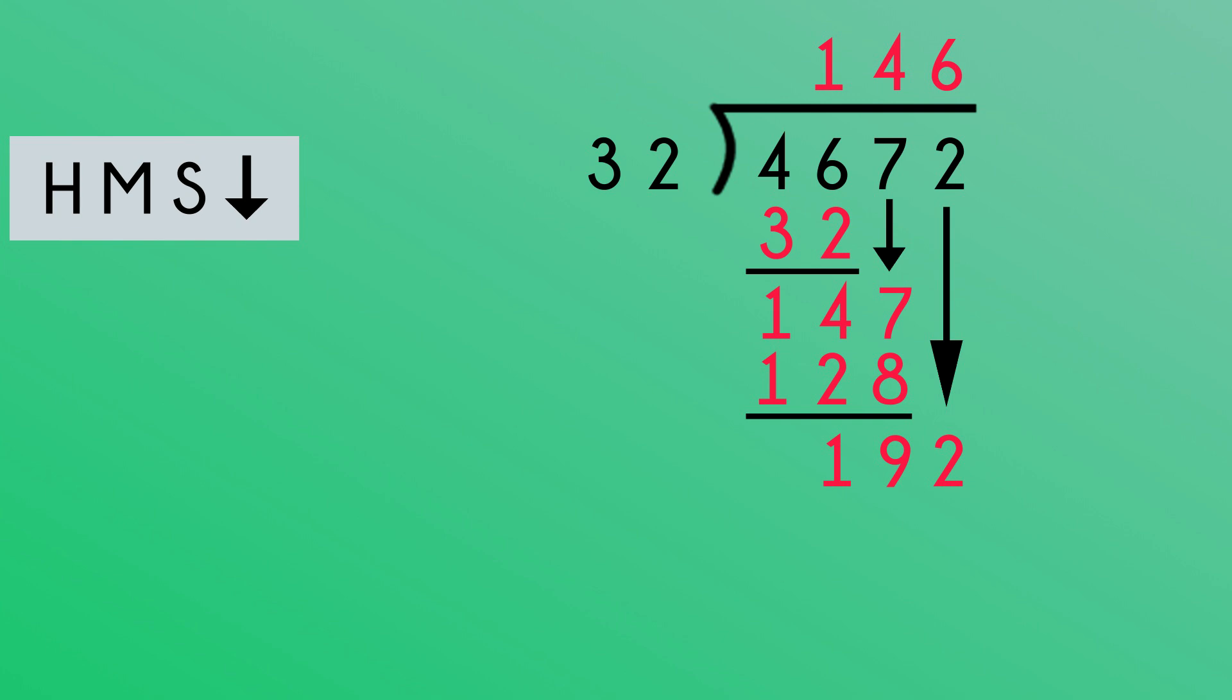Now we multiply. 32 multiplied by 6 is 192. 192 subtract 192 is 0. 4,672 divided by 32 is 146.